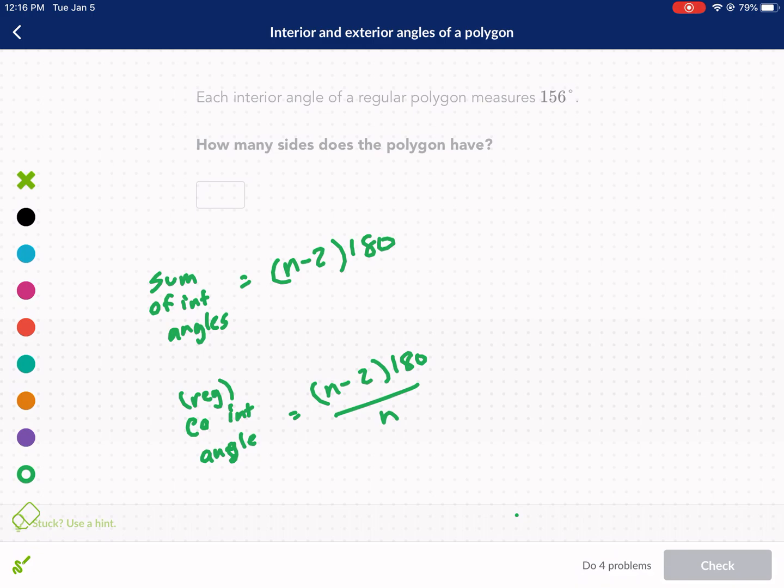Each interior angle of a regular polygon measures 156 degrees. So we're going to go to the second formula and we're going to say 156, that's the angle of each interior angle, equals n minus 2 times 180 divided by n. So we're asked to find n, n is equal to the number of sides. Essentially all we need to do here is solve for n.